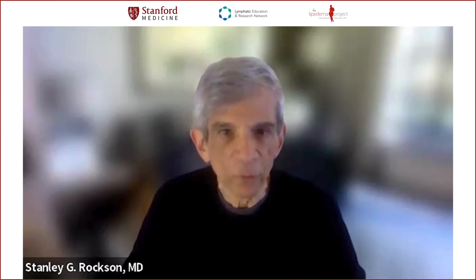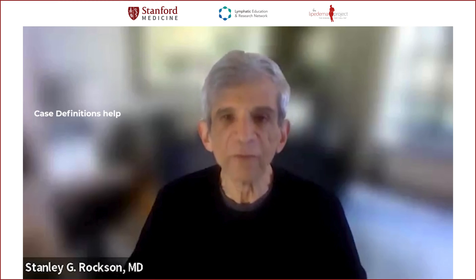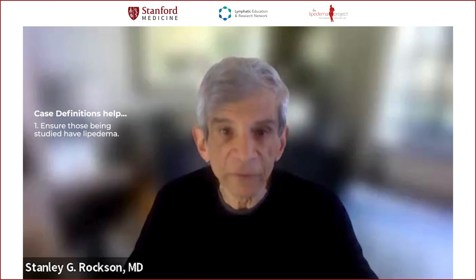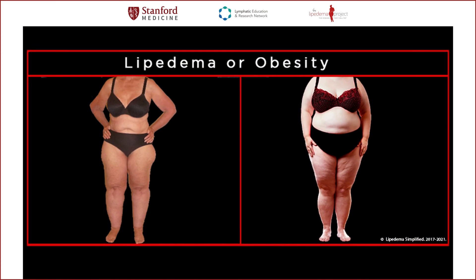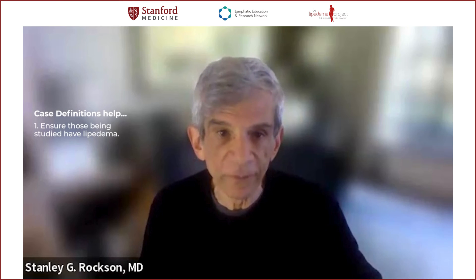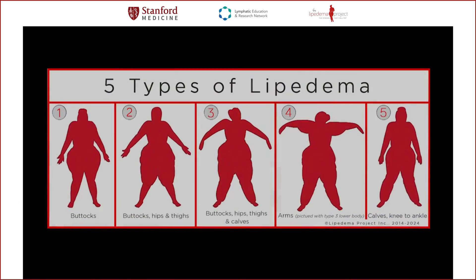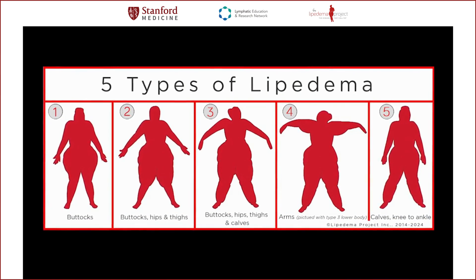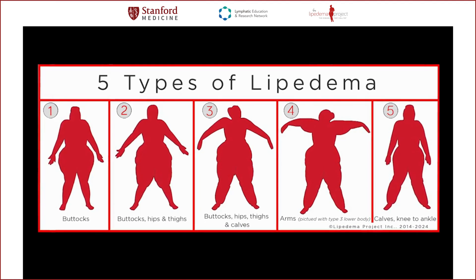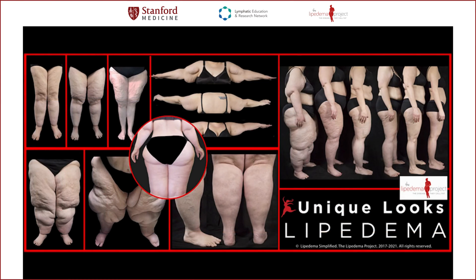Many diseases and disorders can have overlapping symptoms despite differing underlying mechanisms, so a case definition helps to ensure that the subjects of the study have the disease of interest. If we are trying to improve our understanding of lipedema, we have to be as sure as possible that we are studying individuals who actually have lipedema, not something else that looks like lipedema or simply has a few similar symptoms. Case definitions also help ensure that individuals in control groups do not have the disease. If they meet the case definition of lipedema, they may actually have lipedema and should be excluded from the control group. This is important for asking questions like how does lipedema differ from constitutional obesity or from the absence of disease — questions crucial to understanding the root causes of lipedema.